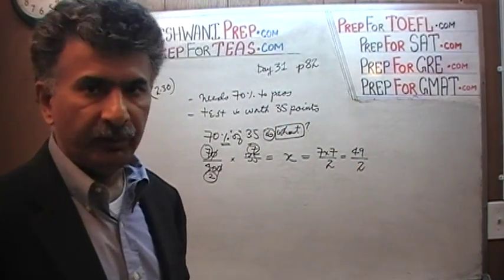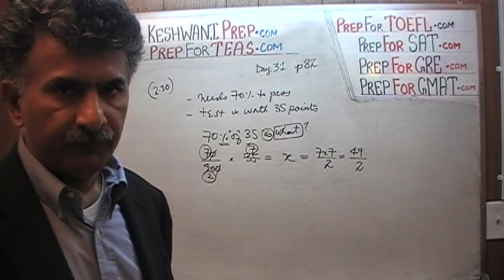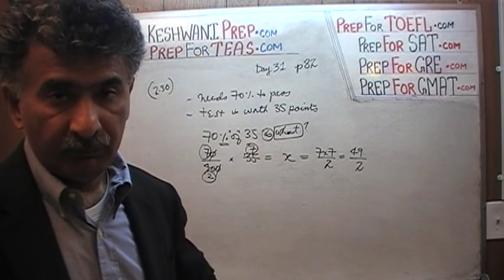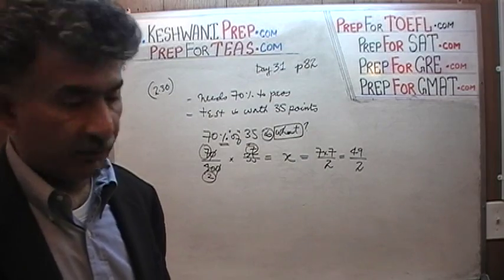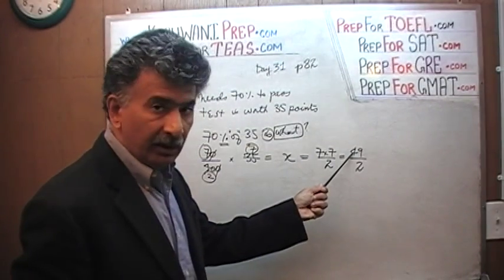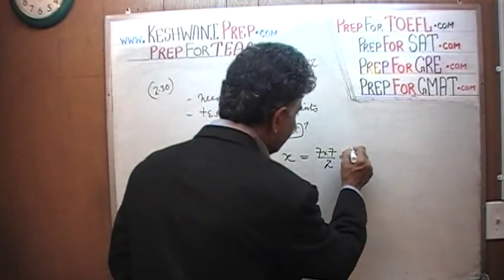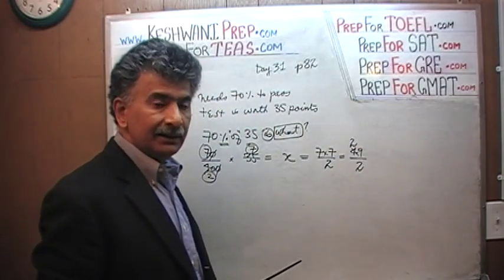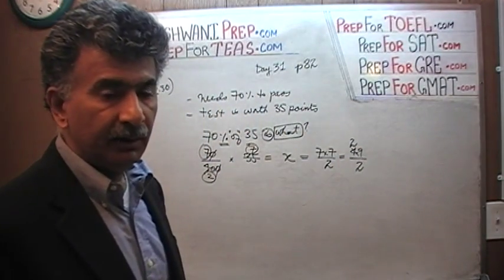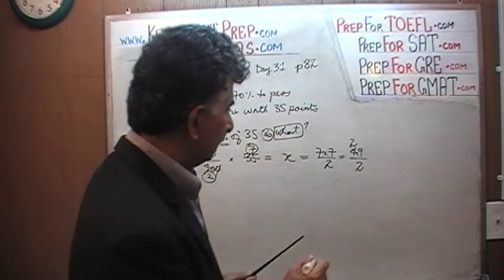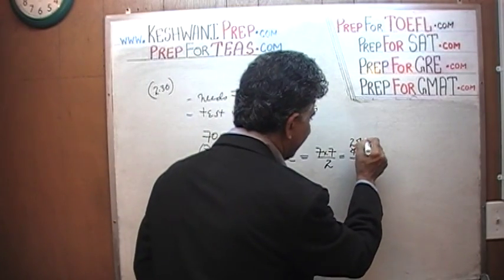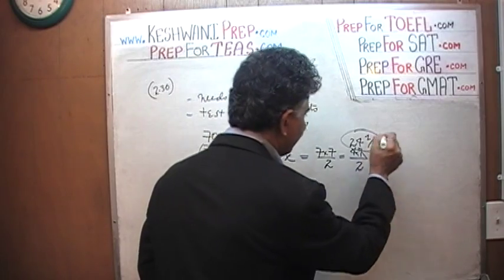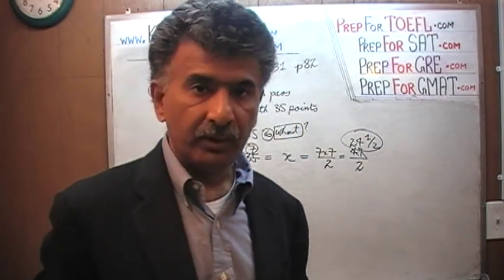We have to figure out what 49 over 2 is. What is half of 49? Well, half of 50 is 25, so half of 49 would have to be 24 and a half. Let's verify: how many 2s in 4? Two. How many 2s in 9? Four 2s are 8, and the remaining 1 divided by 2. So the answer is 24 and a half points — that's what the student needs.